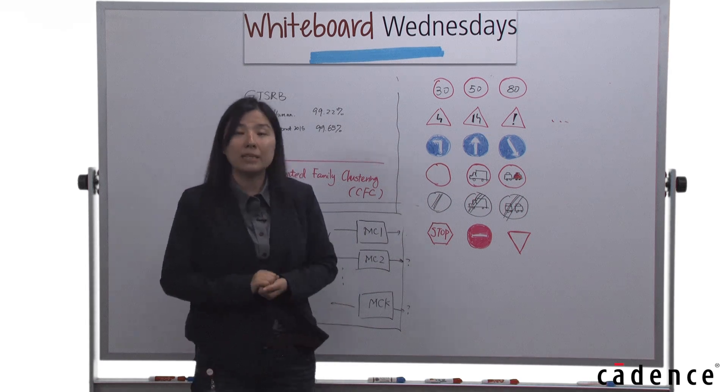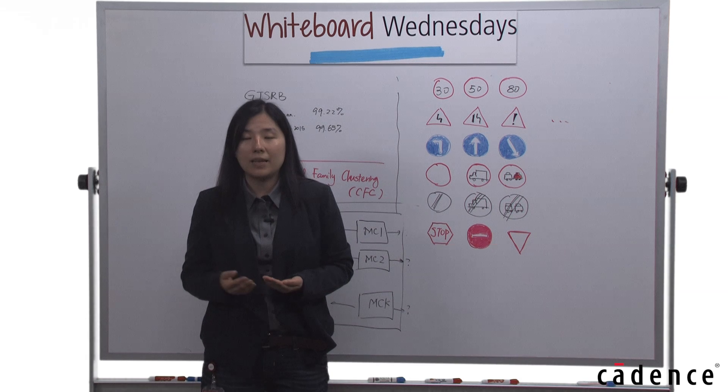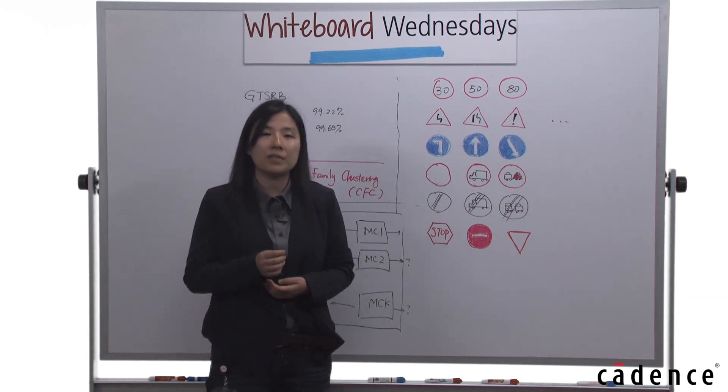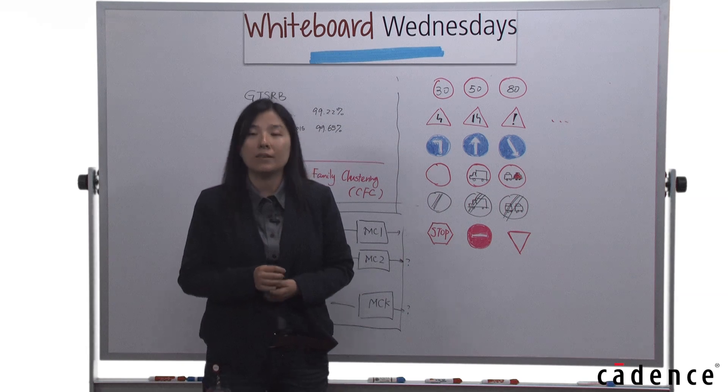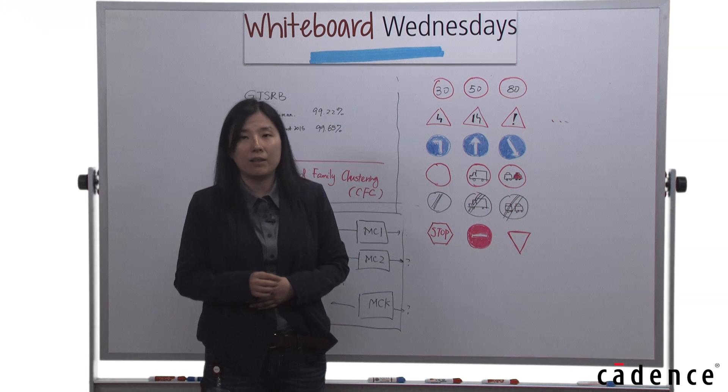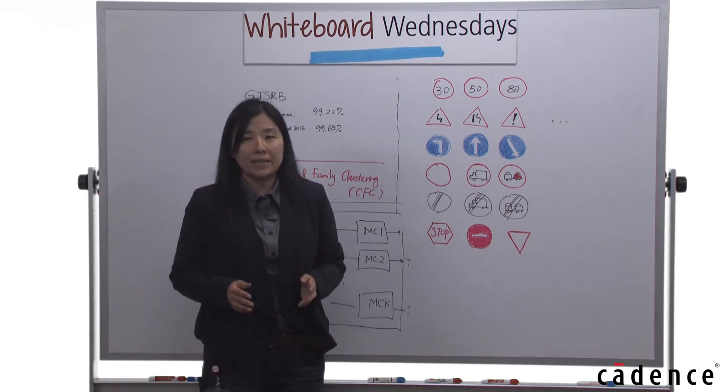But that's not the end. After we get set A and set B, we examine the standard deviation of similarity within each set. If the standard deviation is larger than a predetermined threshold, we split it again.